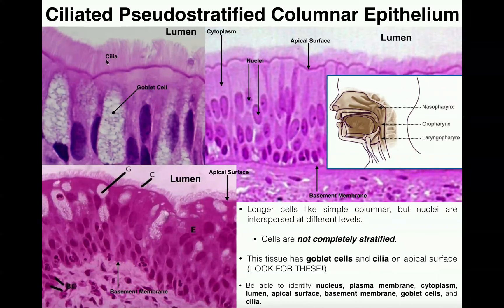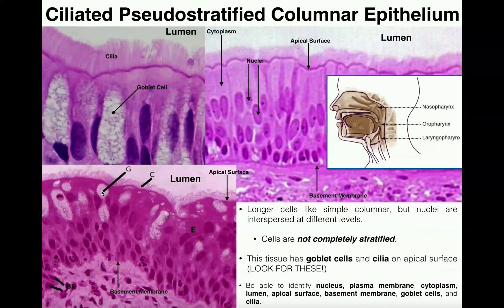Also notice in ciliated pseudostratified columnar epithelium there are goblet cells interspersed between the columnar cells. These goblet cells, labeled 'G' in some images, have similar functions to those in simple columnar epithelium — they secrete mucus into the lumen.